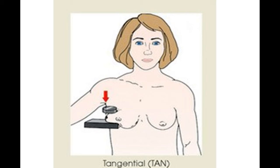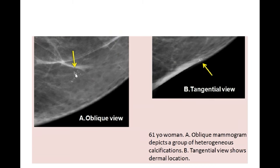The tangential view is used to visualize intra-cutaneous or dermal lesions. In other views, these lesions may appear to be within the breast parenchyma when they are actually in the intra-cutaneous part. To solve this, we take the tangential view, in which the x-rays are directed at the intra-cutaneous part of the lesion such that the direction of the x-rays is tangential to the lesion.